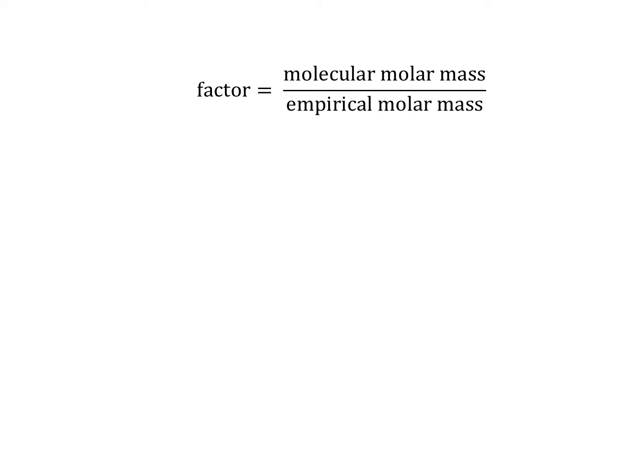The empirical molar mass is what you need to find, which is easy enough because we know what the empirical formula is. Going to the periodic table and adding that up, we find that the empirical formula molar mass is 31.034 grams per mole. Putting all this information into our equation, we find that the factor is now 2.